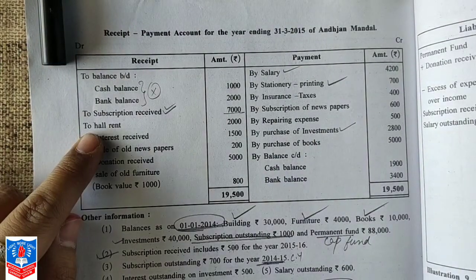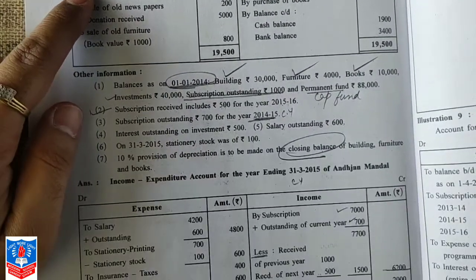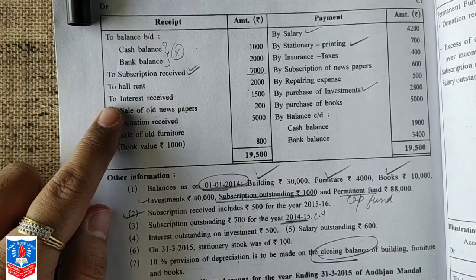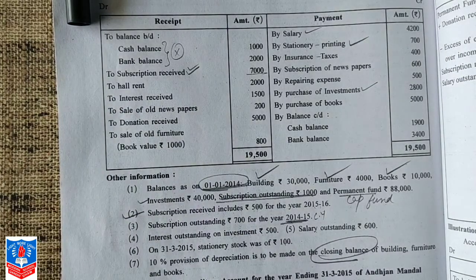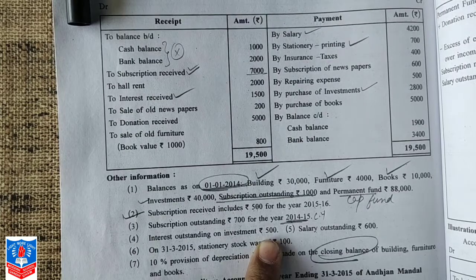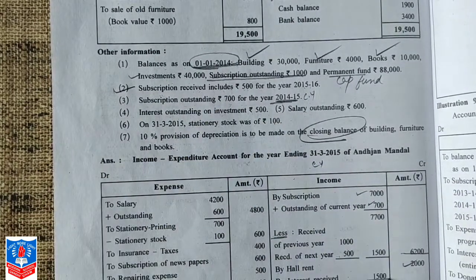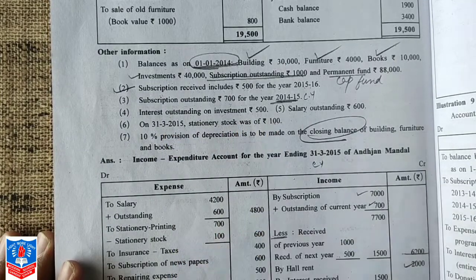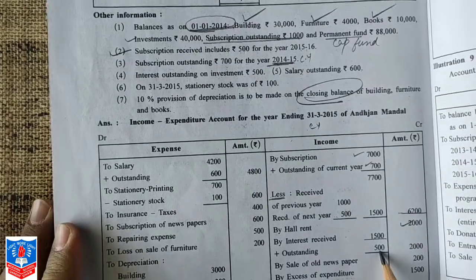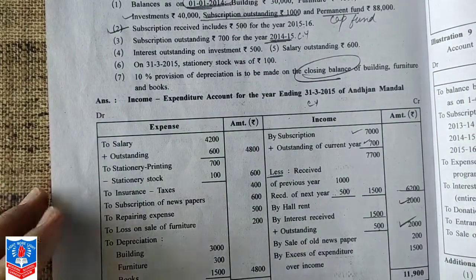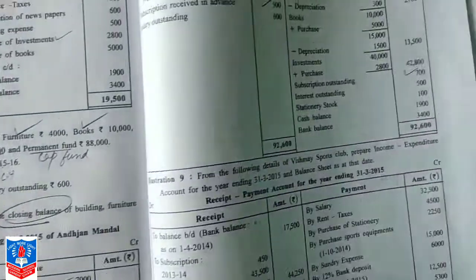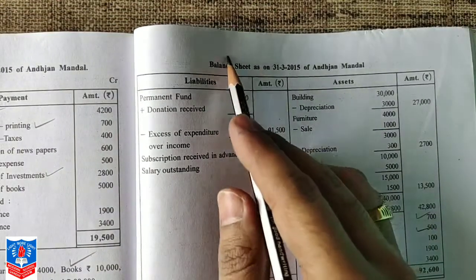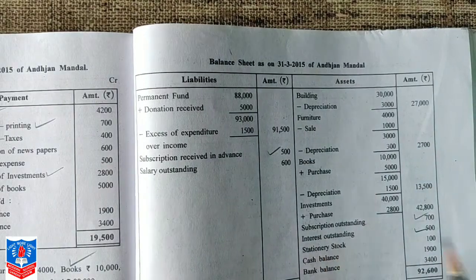Next is hall rent — hall rent will be your income, shown on the credit side of income expenditure account. Next is interest received. Interest received is 1,500, plus there is one more adjustment: interest outstanding on investment is 500, so 500 more is yet to be received, making it 2,000 total. Interest outstanding of 500 will be shown in the balance sheet on the asset side.